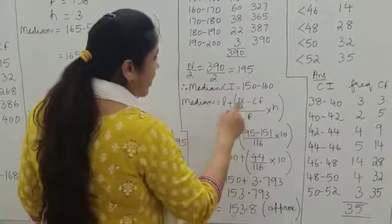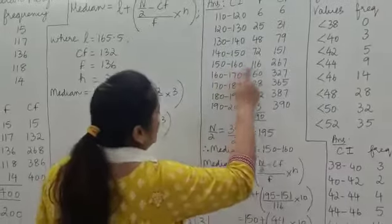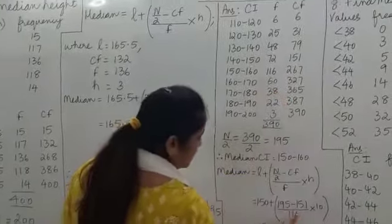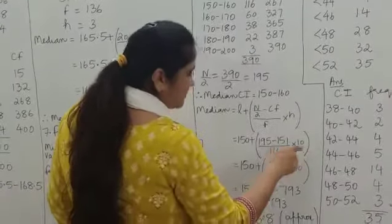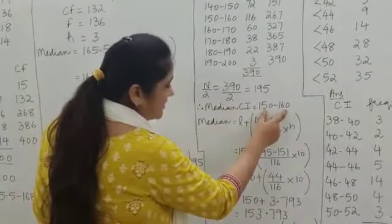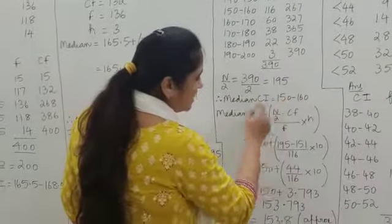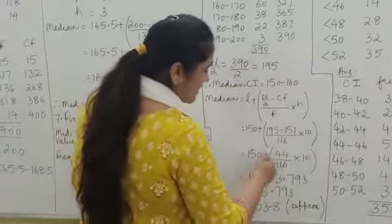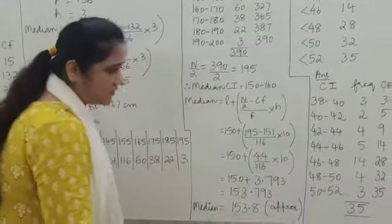F is the frequency of the median class interval, which is 116. H is the width of the median class interval — upper limit minus lower limit — which is 160 minus 150, giving 10. Substituting all values into the formula and simplifying, the value of the median is 153.8.